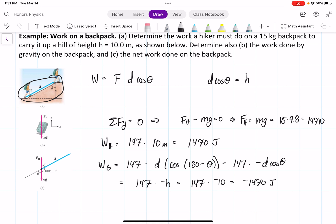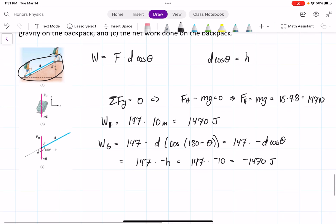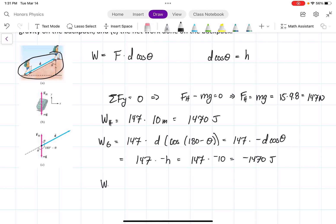So that's the work done from gravity, which you can see is equal and opposite to the work done by the hiker. So if we do the net, we add these two works together, and we get 1470 minus 1470, which equals zero joules.